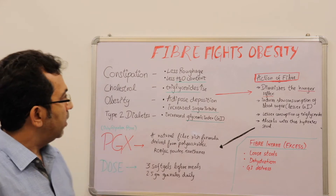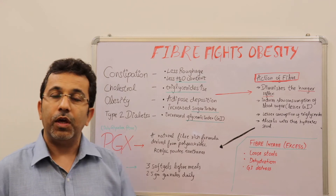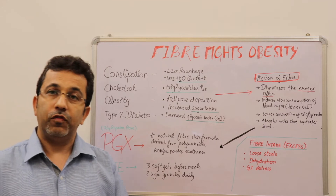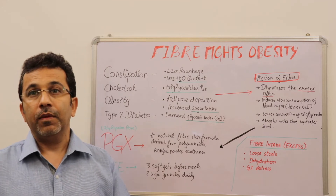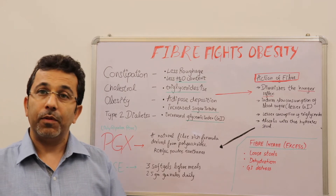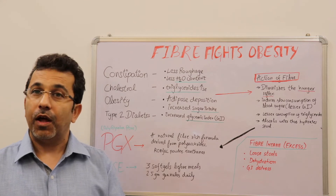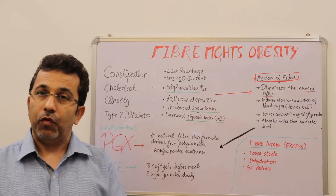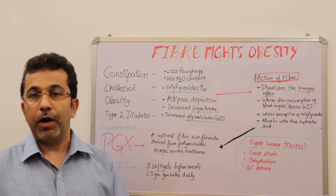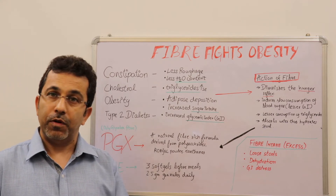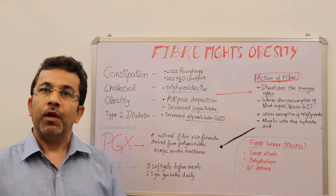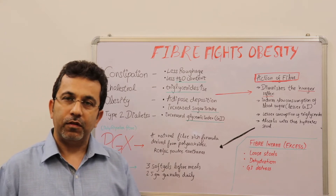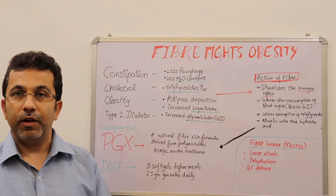Fiber also affects the glycemic index, which is a very useful point in diabetes. It slows down the glycemic absorption, which means your sugar is absorbed more slowly into your bloodstream, which is a very beneficial effect for blood sugar management.